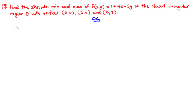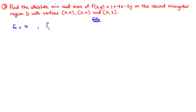We first find fx, which is the first-order partial derivative of the function with respect to x. Differentiating term by term with respect to x and treating y as constant: we differentiate 1, we have 0; we differentiate 4x, we have 4; we differentiate negative 5y, we have 0. So fx = 4.